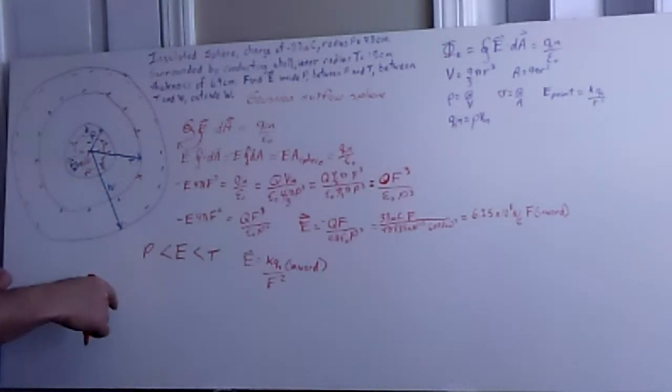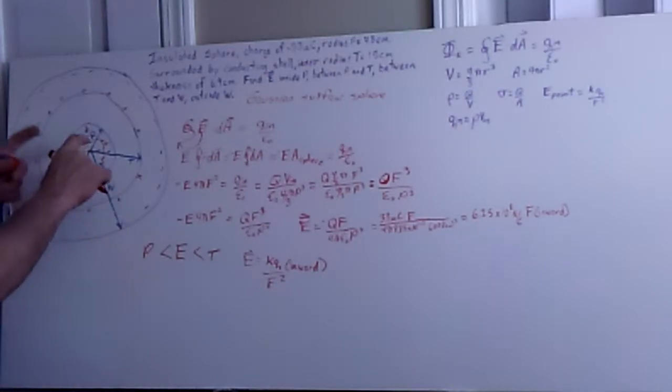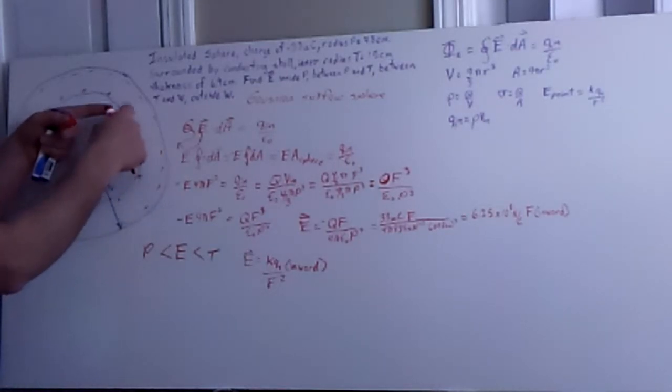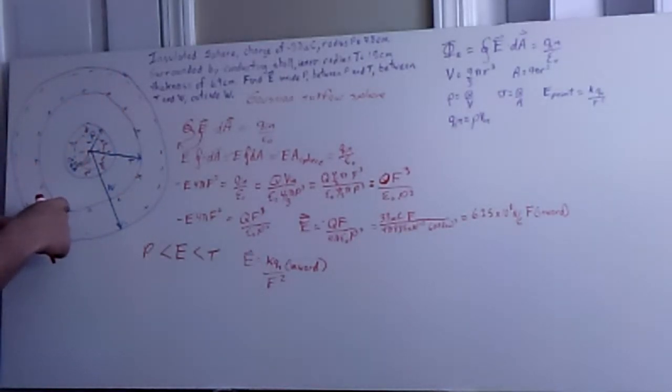But the motion results from the fact that we generate an electric field pointing in. The electrons move in the opposite direction of the electric field inside of the conductor so that the field from the interior insulated sphere and that generated by the separation of charge to the surfaces on the surrounding spherical shell cancel any electric field on the inside.